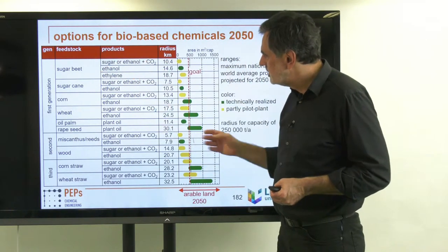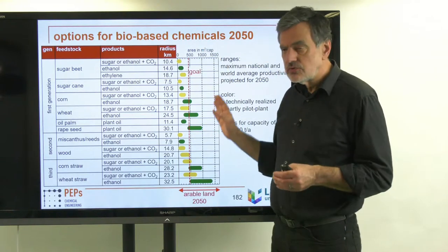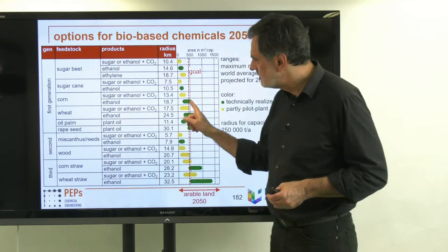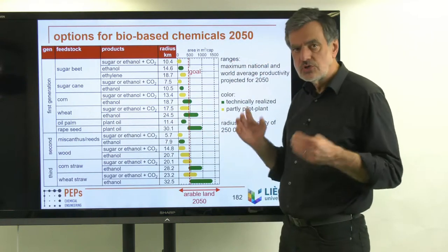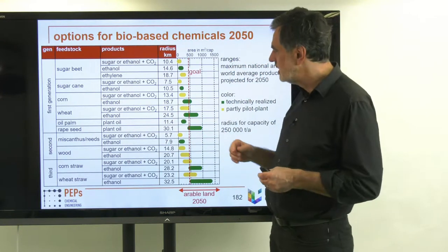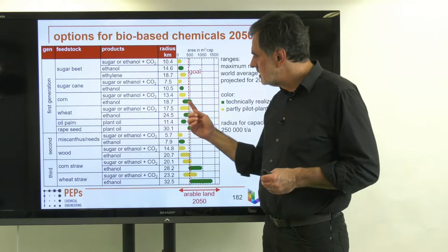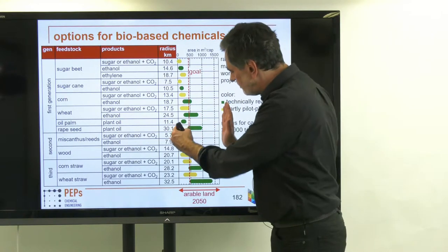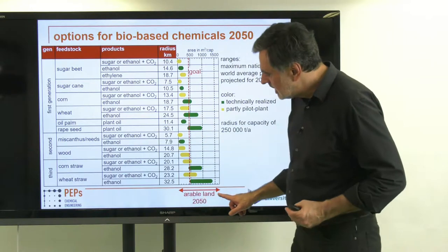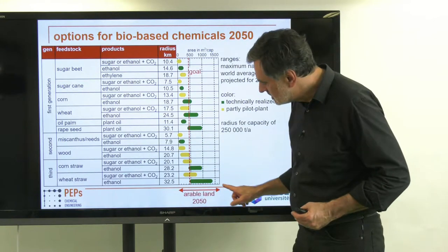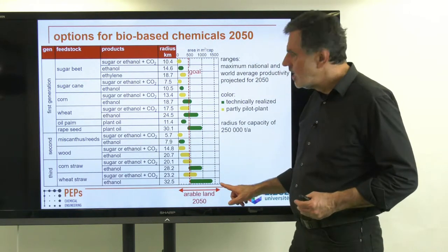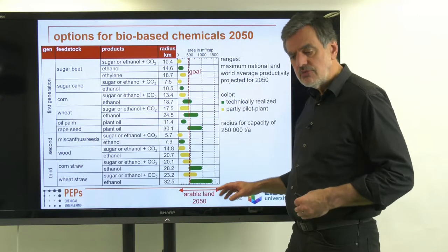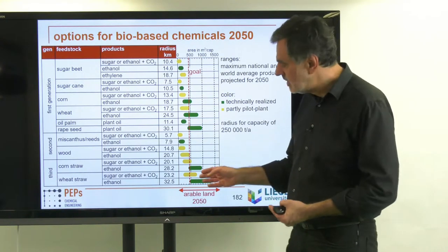These are national averages, not individual fields. Some areas are more efficient, others less, but since these are national averages, they are realistic values reachable at a national level. For two crops — Miscanthus and wood — the basis is slightly different because national average productivities are not available, so I used literature values that propose characteristic productivities for farmers. These may be slightly optimistic relative to national averages, so their productivities could be somewhat lower.